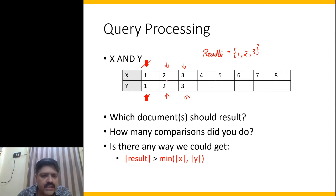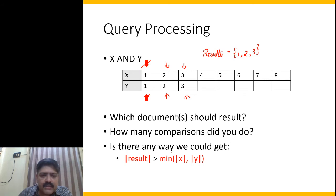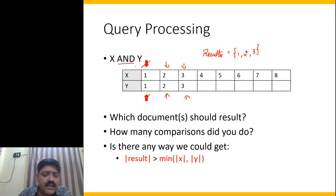Can you think of a way where the number of comparisons could be greater than the minimum of the number of items in X and Y? That should be possible if the document IDs differ. But can the result contain more elements than the least of X and Y? That's not possible, because we are doing an AND operation — we're only interested in document IDs that contain both terms, so the result cannot be bigger than the smallest of X and Y.